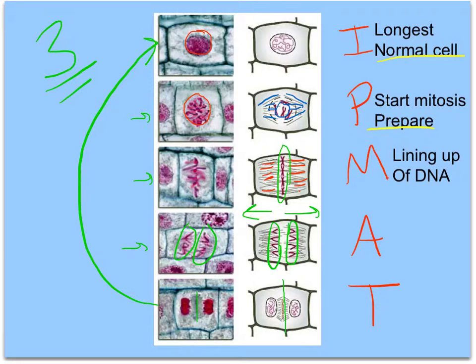In anaphase, that same line begins to split. And as it splits, those chromatids, the sister chromatids of the pairs, begin to separate. They go to the two different poles. And our last phase is telophase.